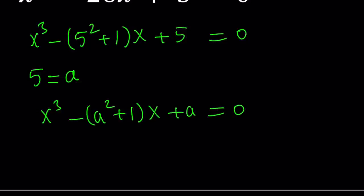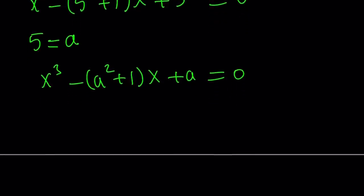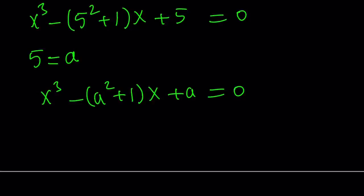We're going to get x cubed minus a squared plus 1 times x plus a equals 0. There are two ways to go about solving this equation. I'm going to show you both methods. Let's do the more painful one first. This is a cubic equation and it's parametric, so it's quite difficult to solve as is. But you can turn it into a quadratic equation because we have a squared.